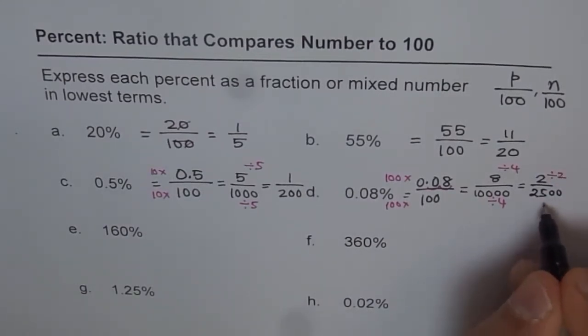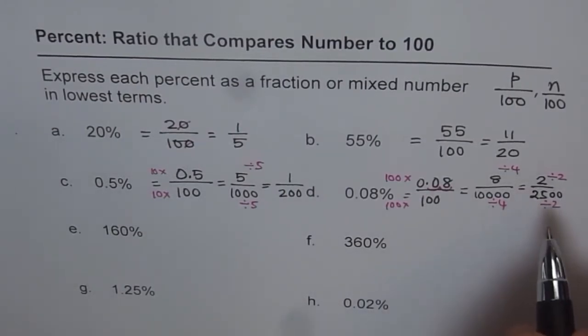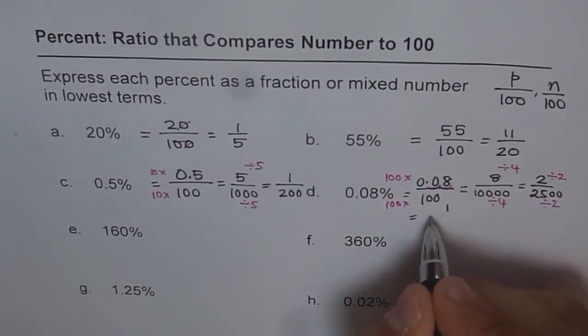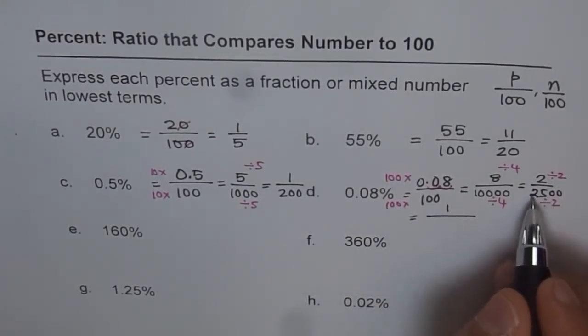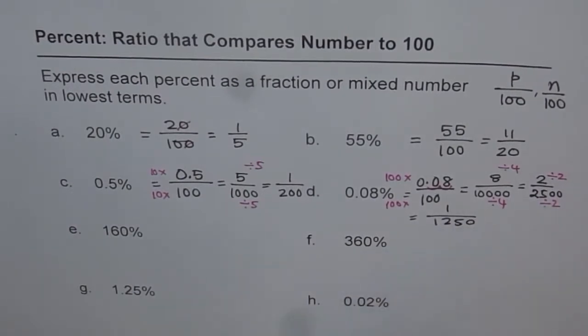So at times, you may not divide by the highest common factor. In that case, what we will do is, we will go repeated division. So let's divide it again by 2. So when you do that, you get 1 out of half of this, 1250. So we got now, fraction in the lowest terms.